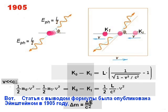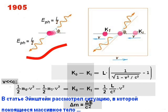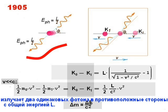Well, the article with the formula derivation was published by Einstein in 1905. In that article, Einstein considered a situation when a massive body, at rest, emits two similar photons in opposite directions, with the total energy L.